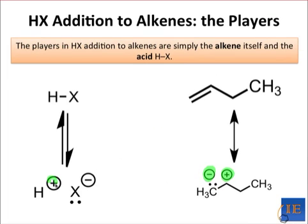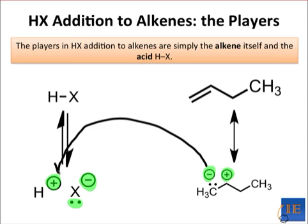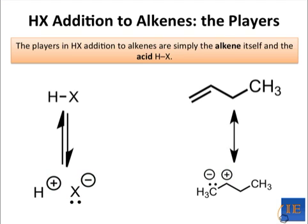Although this may not be the most realistic resonance structure ever drawn, it does show us that a double bond is both a latent nucleophile, or electron donor, and electrophile, or electron acceptor. Interestingly, the same is true of the acid. H-plus is a great electrophile, and X-minus, with its surplus of electrons, can serve as a nucleophile. Working with the structures at the bottom of this slide, it's very easy to see how we could combine the two sets of charges together to form a neutral product.